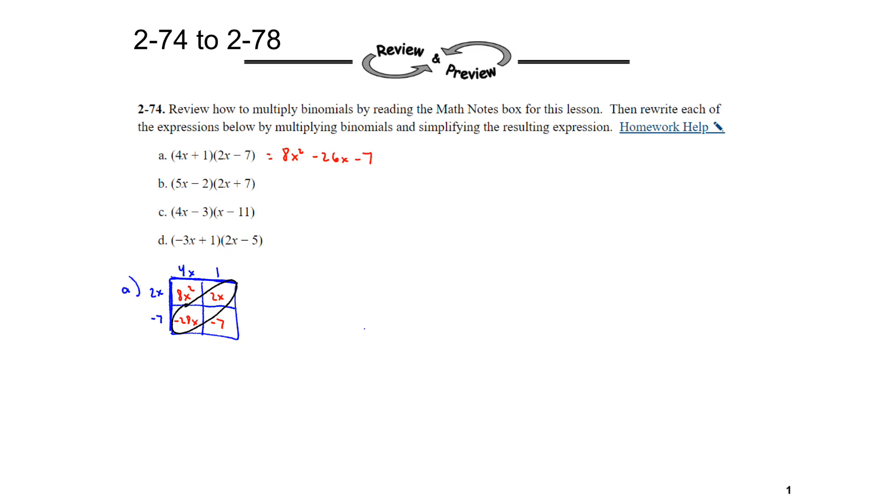And so you can always use the area model to answer any of these binomial times binomial questions, or really any polynomial times another polynomial. Another way that maybe had been talked at some point is maybe a little shortcut to that. What you'll notice is that we're taking this first term and multiplying it to the two terms on the other side of the box. So for example, on A, you have 4x being multiplied by 2x, and then 4x being multiplied by negative 7.